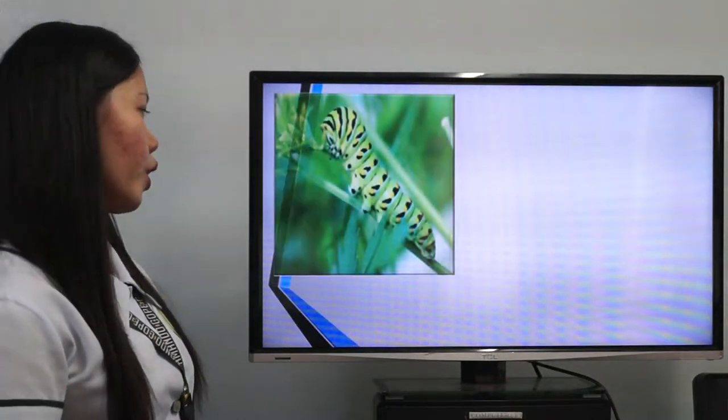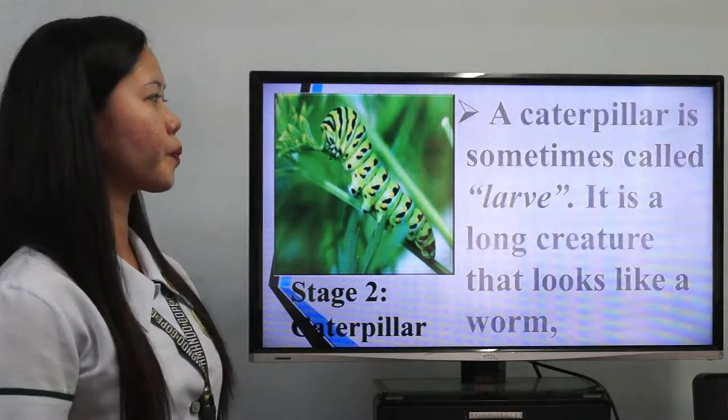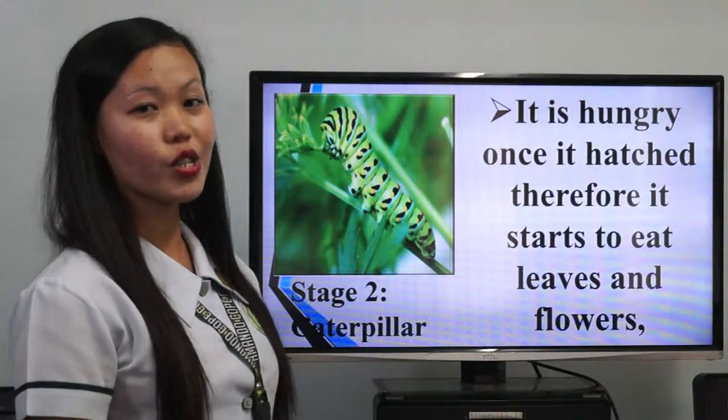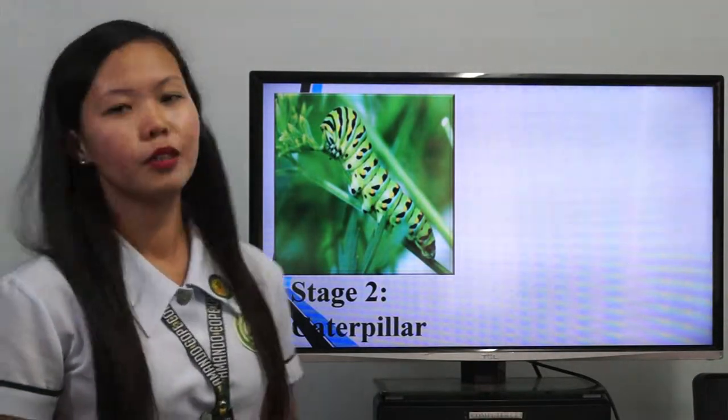The second stage is the caterpillar, sometimes called the larva. It is a long creature that looks like a worm. Once it hatches, it is hungry and starts to eat leaves and flowers. This is the eating and growing stage. A caterpillar grows really fast because it eats all the time. It grows so fast that it becomes too big for its skin, so it has to shed its old skin and get new skin. This shedding of outgrown skin is called molting, and caterpillars do it four or more times while growing.